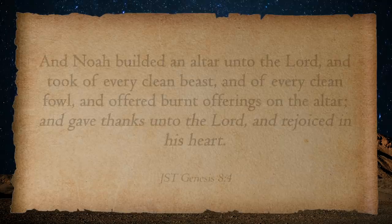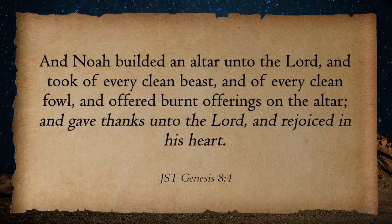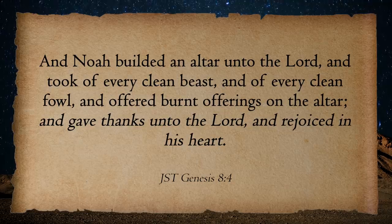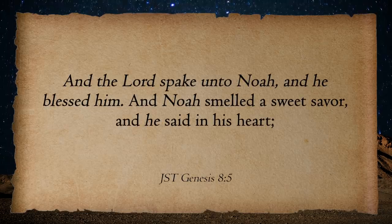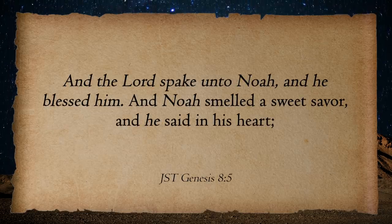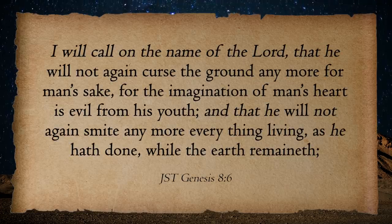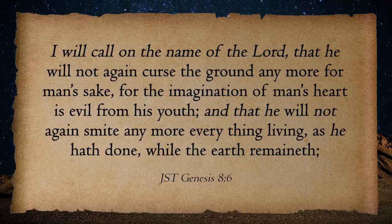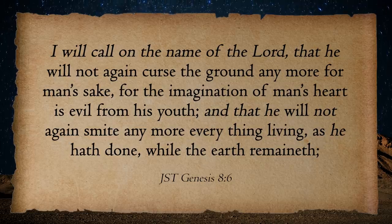Noah built an altar unto the Lord, and took of every clean beast and of every clean fowl, and offered burnt offerings on the altar as he's now off the ark. You'll notice the footnote takes you to Genesis 9, 4 through 6 in the appendix — that's the very first entry of the larger Joseph Smith translation adjustments. The JST adds: 'And Noah builded an altar unto the Lord, and took of every clean beast and every clean fowl, and offered burnt offerings on the altar, and gave thanks unto the Lord, and rejoiced in his heart. And the Lord spake unto Noah, and he blessed him.'